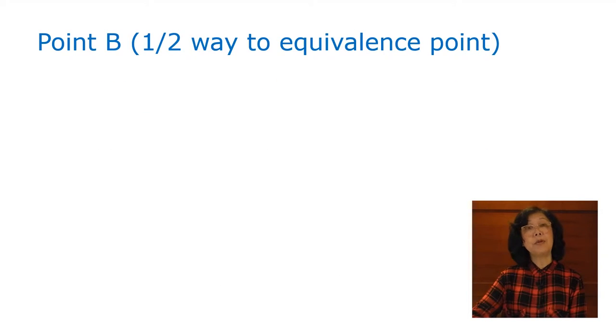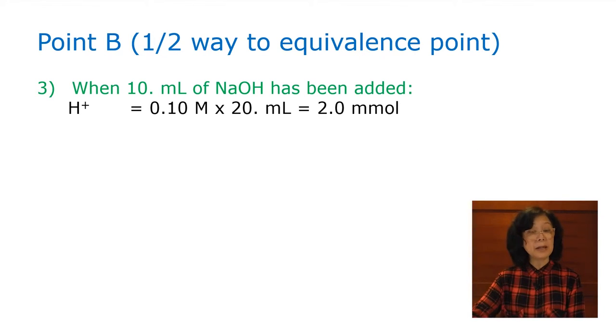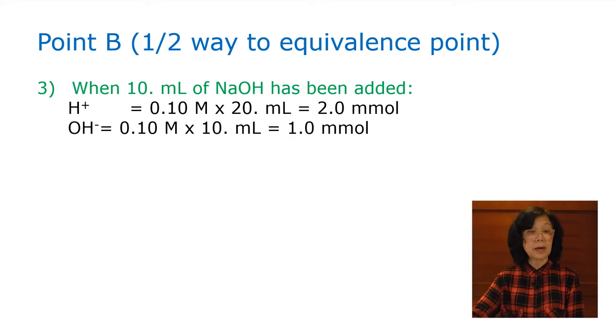Now, we're going to calculate point B, the second point, which is halfway to the equivalence point. At this time, we would add half the amount, which is 10 milliliter of NaOH. So, the hydrogen ion is calculated as, in the beaker or in the flask, 0.1 molar times 20 milliliter, which is 2.0 millimole to begin with. Now, we add the hydroxide ion, which is 1 millimole.